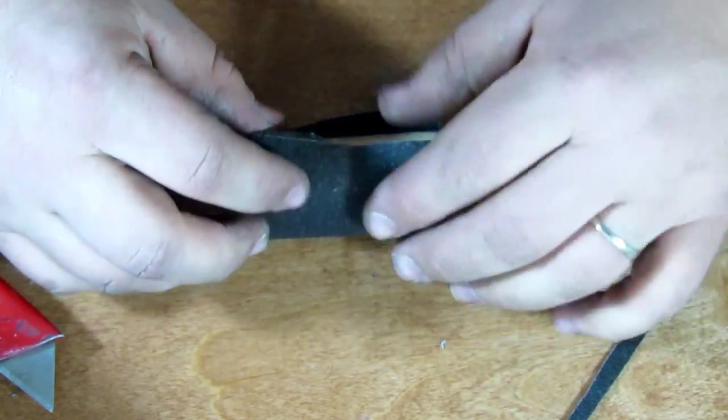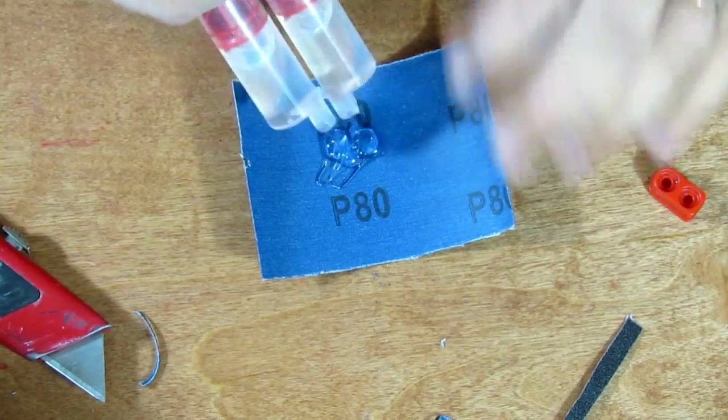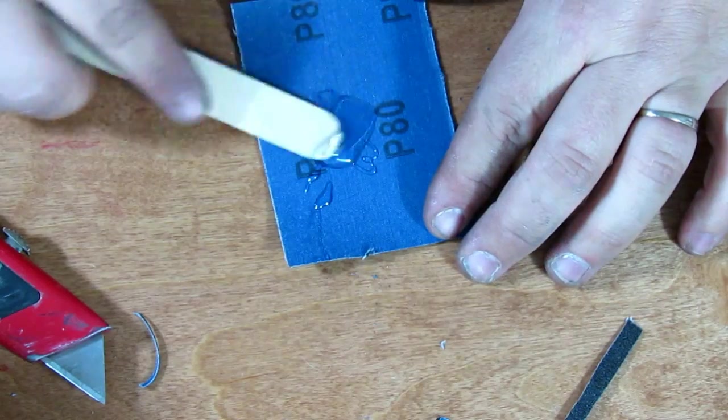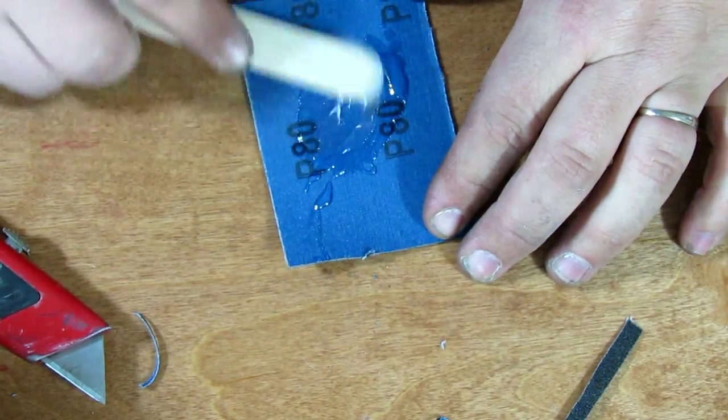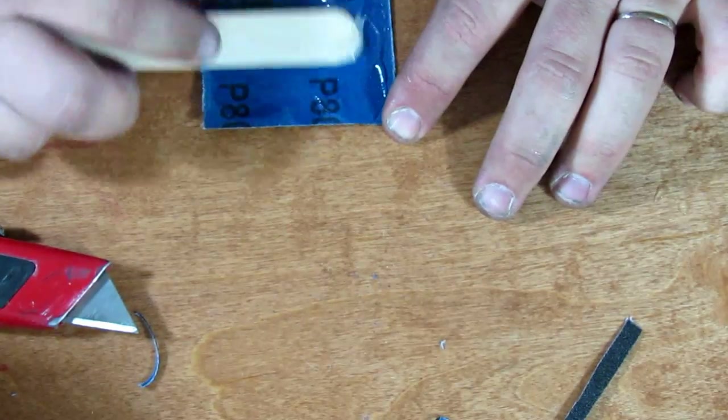Once everything is set how you want it, you need to add some two-part epoxy directly to the back of the sandpaper. You can mix it right on the back. Then spread it out evenly across the whole strip.